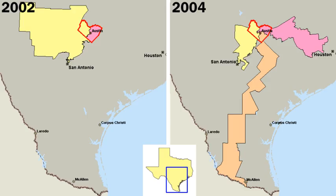State governments have the power to make laws that are not granted to the federal government or denied to the states in the U.S. Constitution for all citizens. These include education, family law, contract law, and most crimes. Unlike the federal government, which only has those powers granted to it in the Constitution, a state government has inherent powers allowing it to act unless limited by a provision of the state or national constitution.